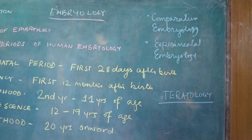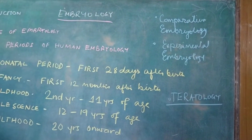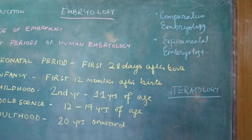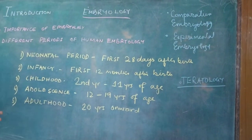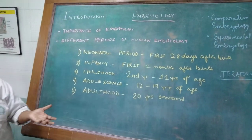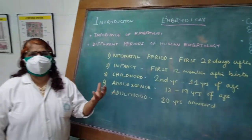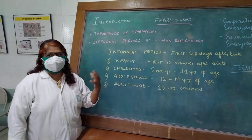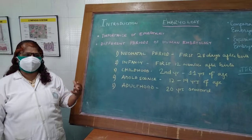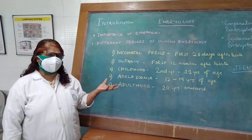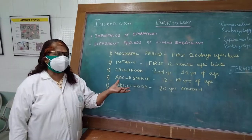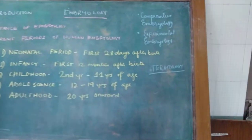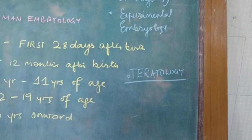When the baby is growing, if any drug is taken by the mother, experimental embryology examines what the effects will be on the developing baby. If there are anomalies which occur due to abnormal development of the baby, that is called teratology.